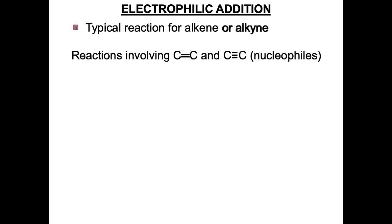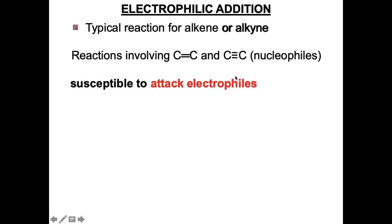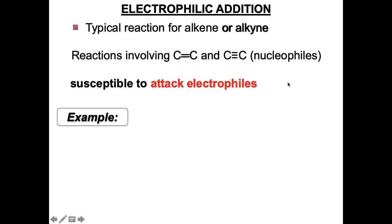For electrophilic addition, it involves typical reactions for alkene or alkyne. The C=C in alkene and C≡C in alkyne are both nucleophiles — electron-rich species — susceptible to attack by an electrophile. The reaction is named electrophilic addition because the nucleophile (alkene/alkyne) reacts with an electrophile.